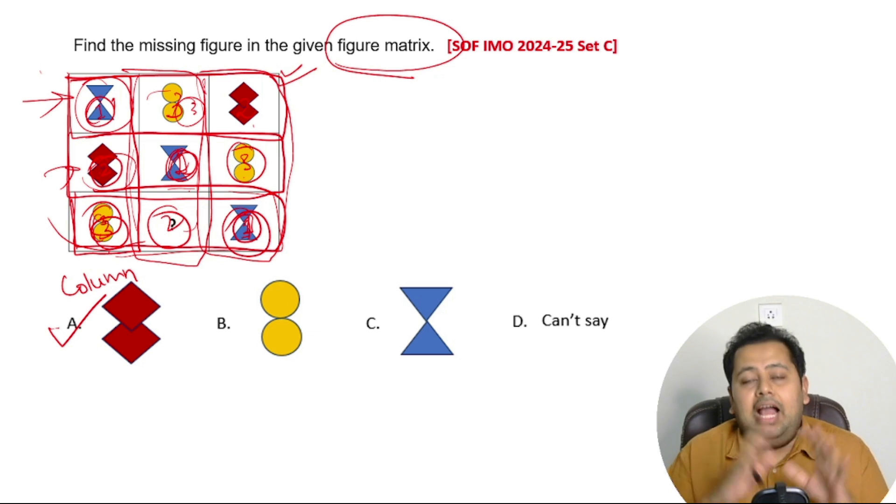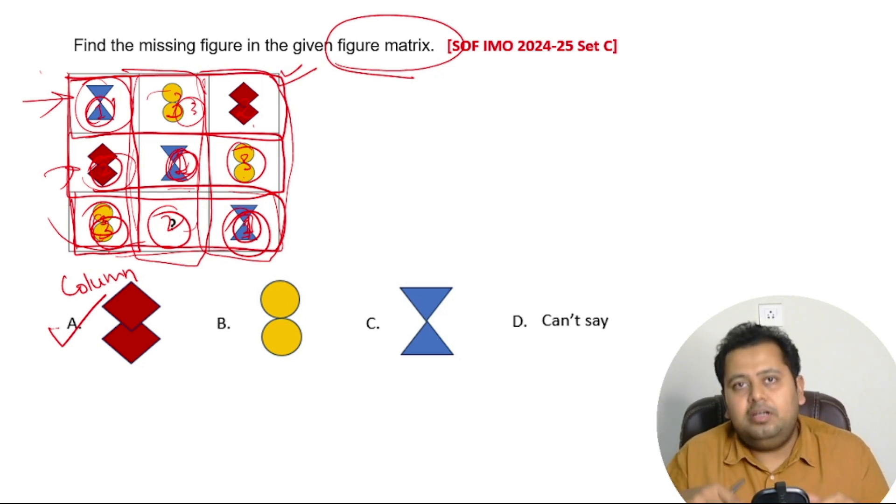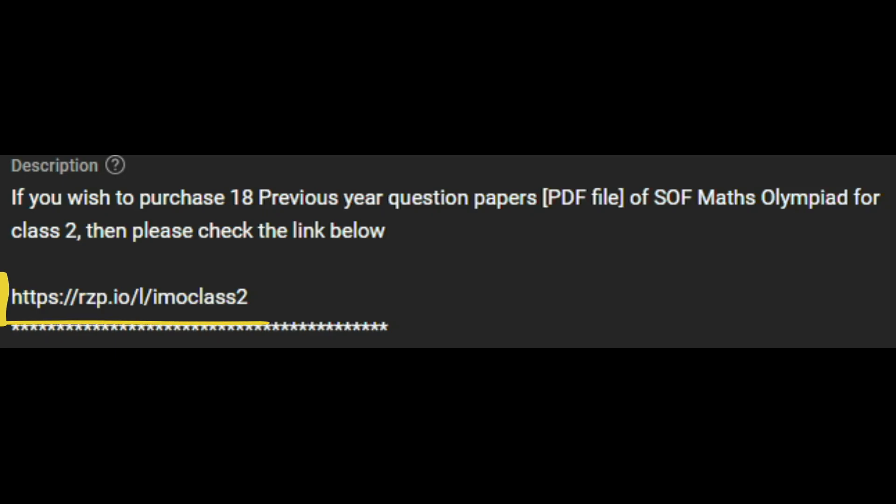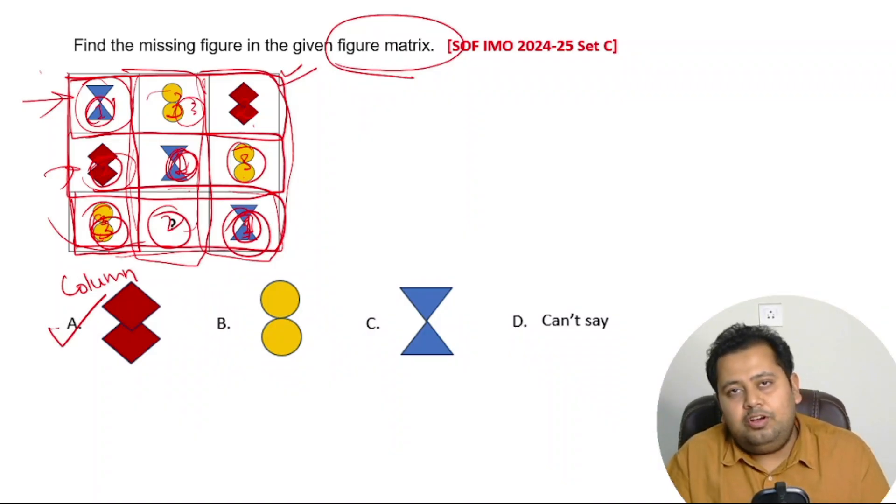We'll meet you in the next video again. If you want to solve 18 question papers of Mathematical Olympiad class 2, then you can find the link in the description. You can buy it only for rupees 89. So we'll see you in the next video. Till then, thank you, Jai Hind.